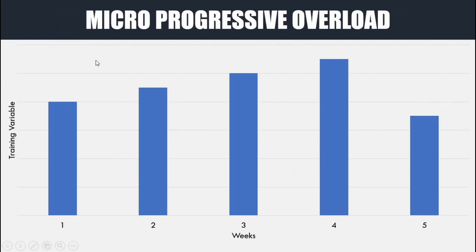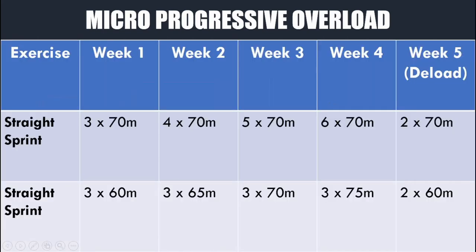Applying progressive overload at a microcycle level — week to week — may look something like this: we present some sort of training with overload each week, followed by a deload period. In this case we're starting at week one, progressing over weeks two, three, and four, and then week five is actually an easier week than week one. The reason for the deload is to drop the fatigue accumulated by applying progressive overload. For example, for a sprint exercise: three sets of 70m, four sets, five sets, six sets, followed by a deload of two sets of 70m — this is an accumulation progression.